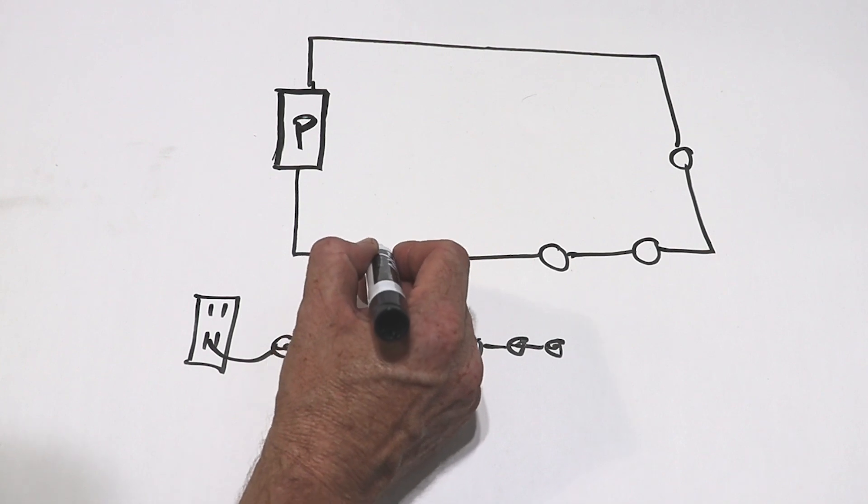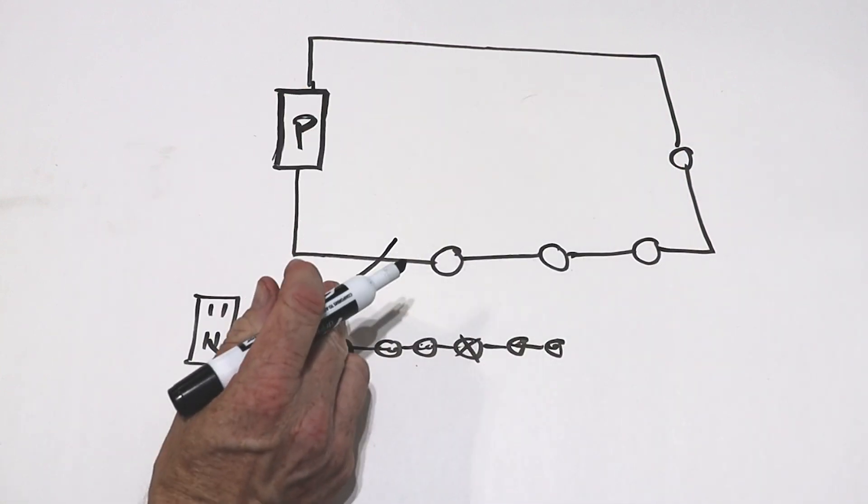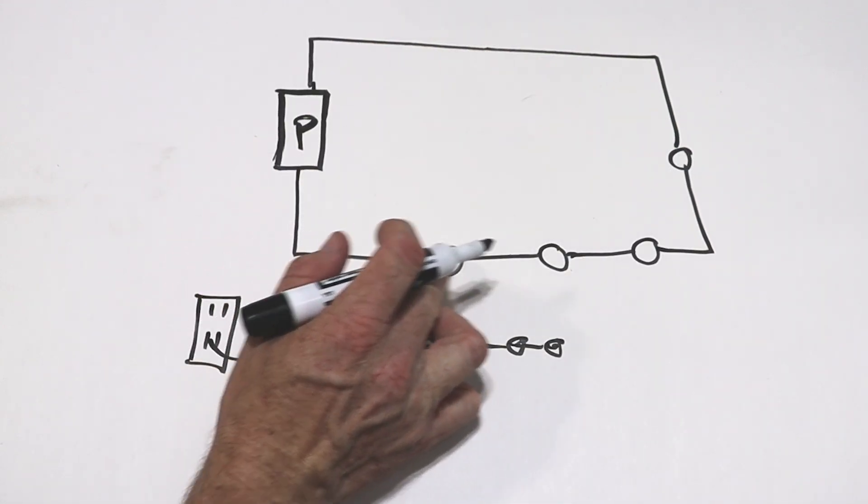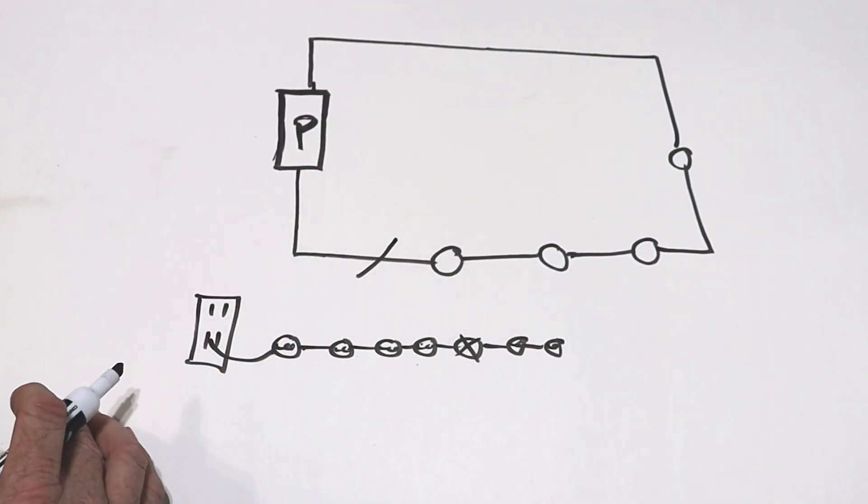So that would be the same thing as you cutting a circuit here. Let's say this circuit up here got cut, it's going to break this circuit, and it's not going to work anymore. There's no path for the electrons to flow or the electricity to flow around the circuit, and it'll stop working.